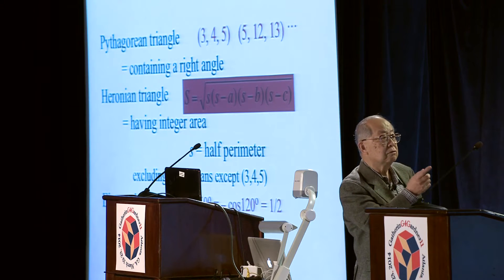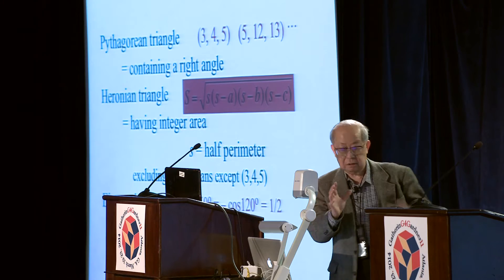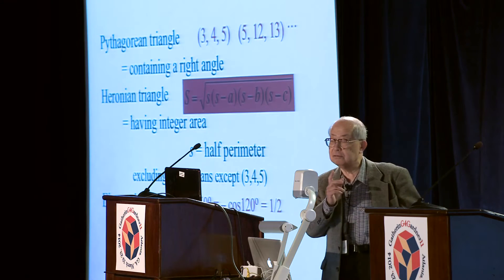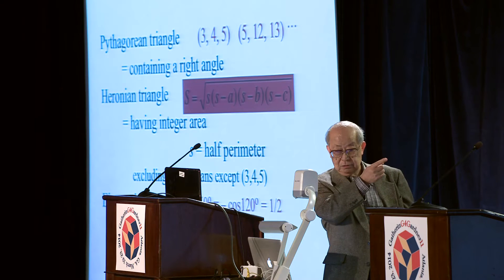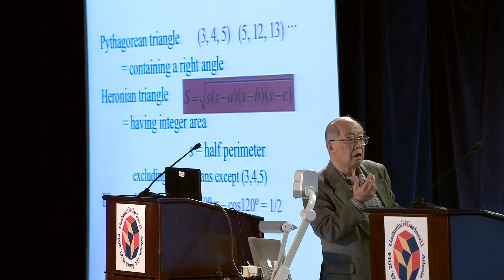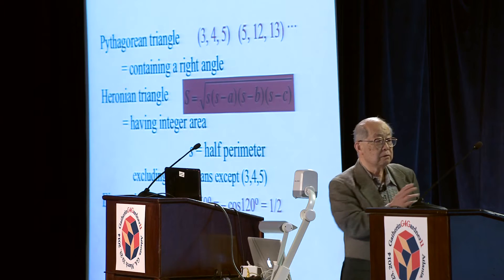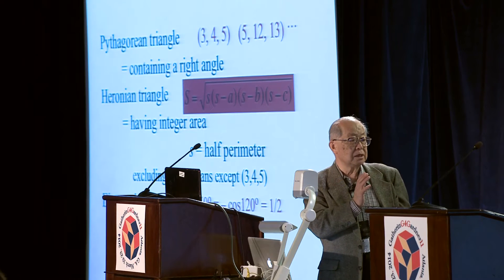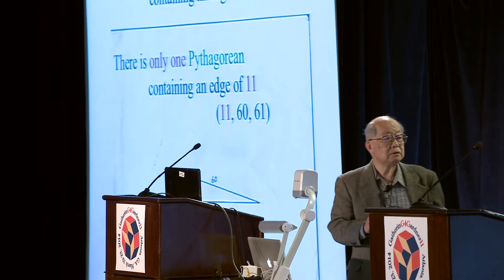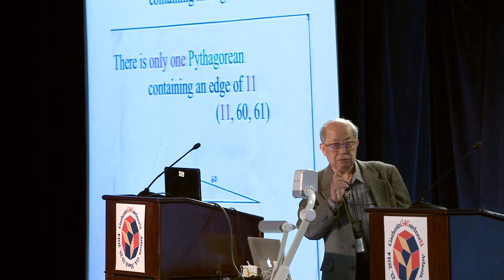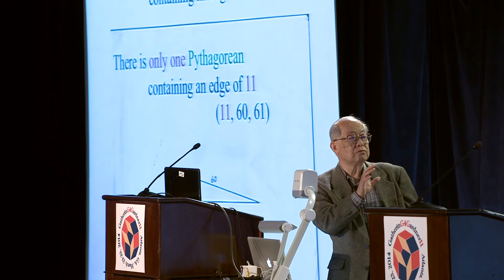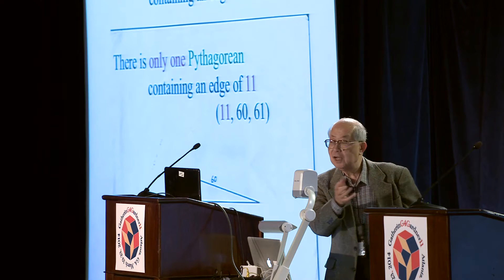The second group is Heronian: it has integer area with integer edges. All Pythagorean triangles are Heronian according to this definition, so usually we exclude those Pythagorean except for 3, 4, 5. The third one is not so popular — it is the Eisenstein triangle with 60-degree or 120-degree angles. There is only one Pythagorean integer triangle whose edge is 11: that is 11, 60, and 61.